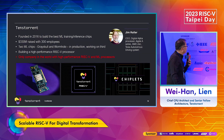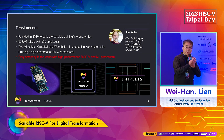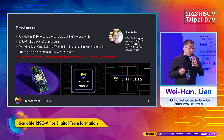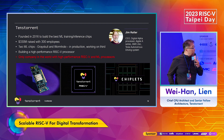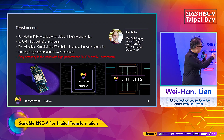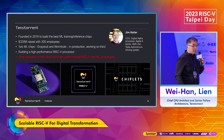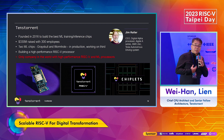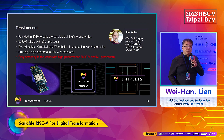Tenstorrent was founded in 2016 with the mission of building AI processors. Our CEO is Jim Keller, who has an impeccable record of industrial achievement — previously at Apple, Digital Alpha processor, Tesla, Intel, and AMD. We already have two products in production: Grayskull and Wormhole. We are working on the third. I joined the company two and a half years ago to build a high-performance RISC-V processor and create a heterogeneous computation environment.